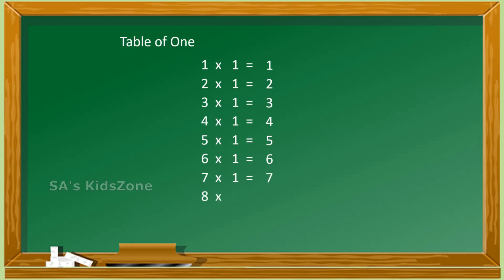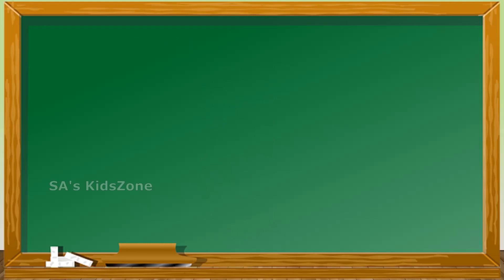8 ones are 8, 9 ones are 9, 10 ones are 10. The next is table of 2: 1 two is 2.